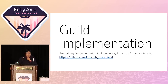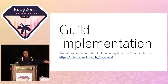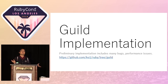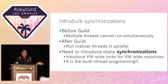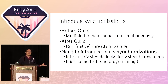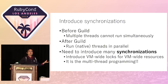I want to introduce some of the preliminary implementation — you can access it, but it has many bugs, so if you run some programs you may see segmentation faults. We need to introduce special context between the VM and threads. Also, we need to introduce many fine-grained synchronizations, which means we need to do racy thread-safe programming — it is very, very difficult. This is why the current implementation has many bugs.